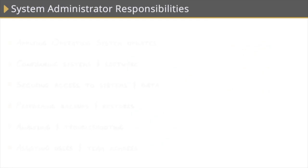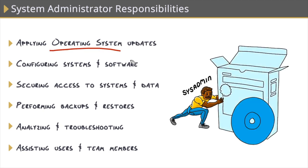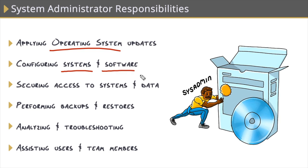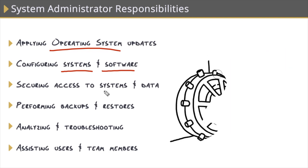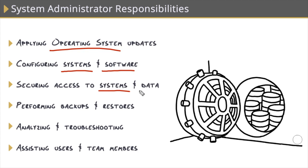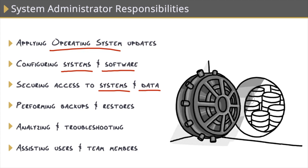What does a sysadmin actually do? One of the primary responsibilities is installing and configuring operating systems on servers in our data centers and on workstations at client sites, and then maintaining those operating systems by applying patches, updates, and hotfixes. We're also responsible for configuring those systems and installing and configuring the software that lives on them. Sysadmins are also responsible for dictating and delegating access to both our machines and the data within our environment. We're also responsible for business continuity — minimizing data loss in the event of a disaster.